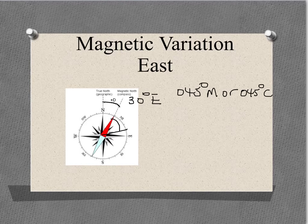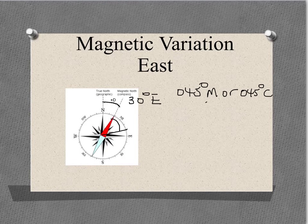The 45 degrees M, or 45 degrees C, are just two different ways of writing the same thing. The M stands for magnetic bearing, and the C for compass bearing.